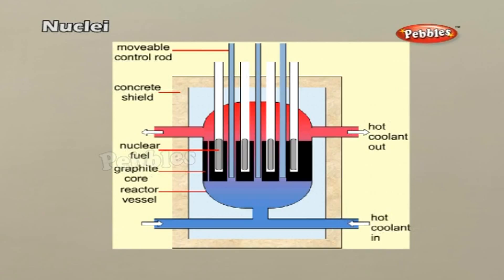Moderator. To slow down the fast neutrons produced during the fission process, a substance called a moderator is used. The purpose of moderator is to reduce the energy of neutron, but it should not absorb the neutrons.